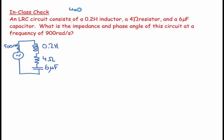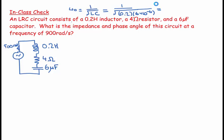We calculated previously that omega naught equals 1 over the square root of L times C. Working that out: 1 over the square root of 0.2 times 6 times 10 to the minus 6. Using the calculator, we get a resonant frequency of 913 radians per second.